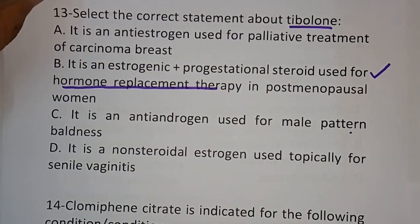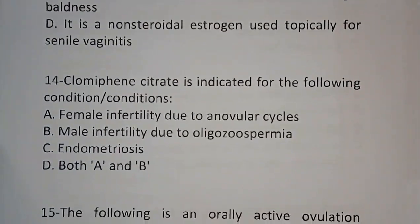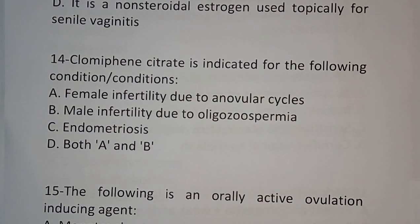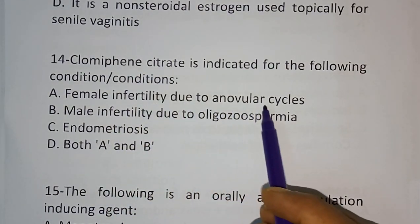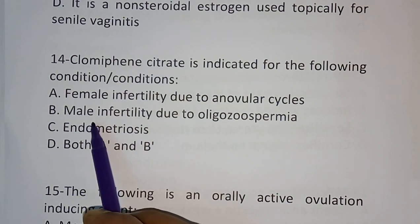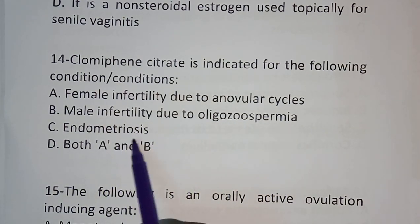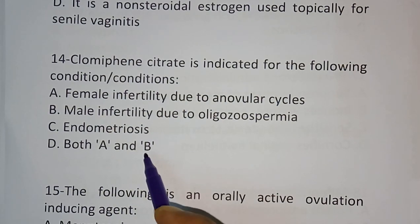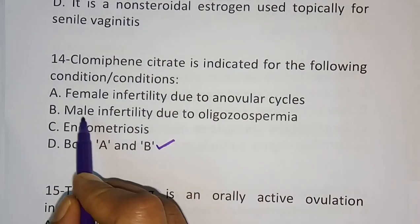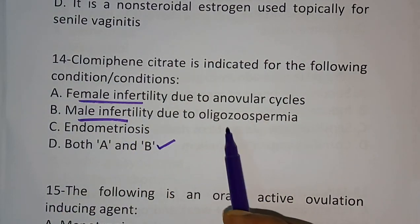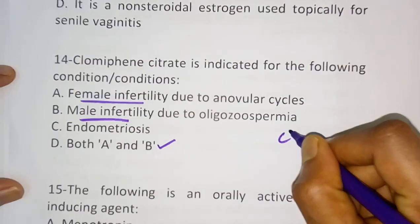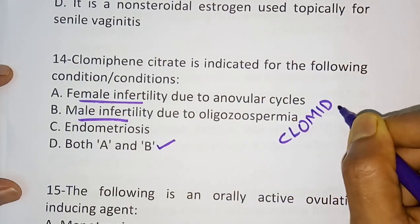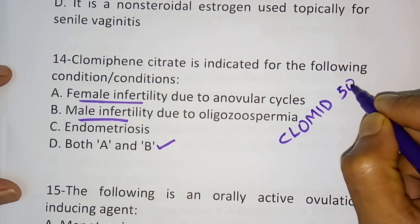Question number 14: Clomiphene citrate is indicated for the following conditions. Options: A) Female infertility due to anovular cycles. B) Male infertility due to oligospermia. C) Endometriosis. D) Both A and B. The correct answer is both A and B — clomiphene citrate can be used for male infertility as well as female infertility.